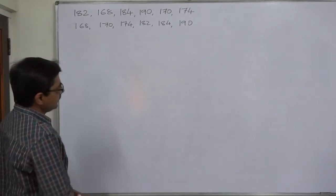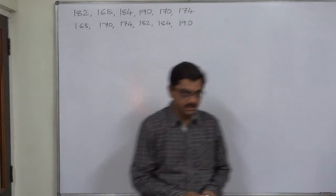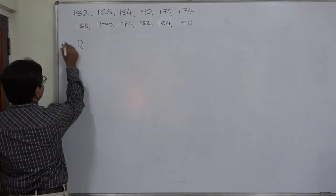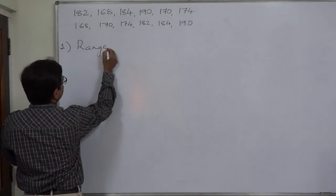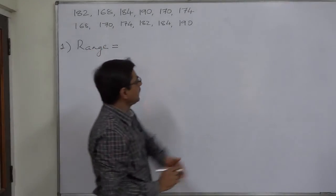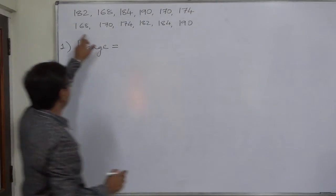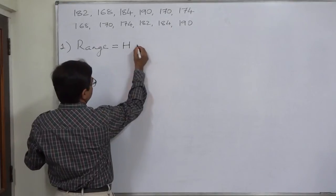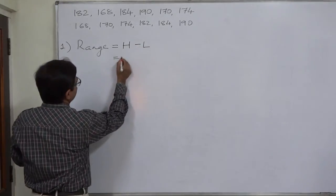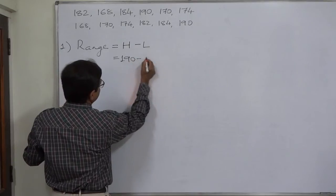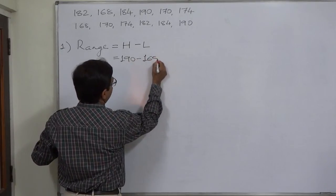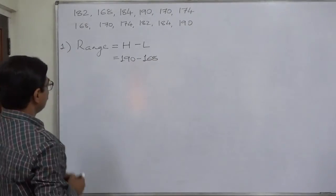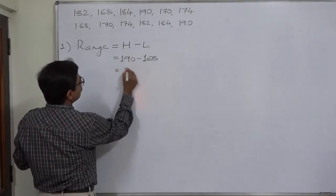The first measure of variation for any data is range. Now, what do we mean by the range of the data? Range means the difference between the highest data value and the lowest data value. That means we have to subtract the lowest data value from the highest data value. In this case, the highest data value is 190 and the lowest data value is 168, so the range comes to 22.